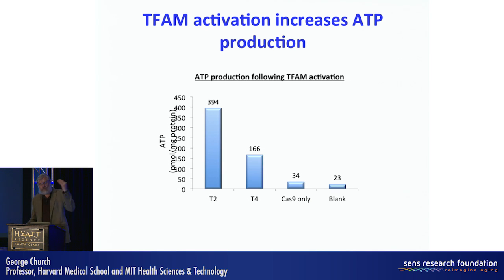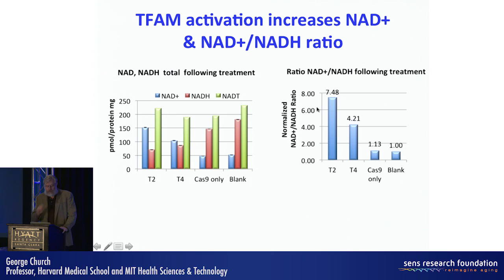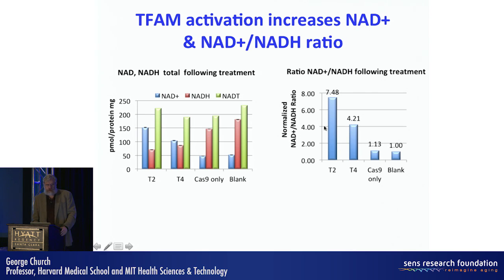Not only is the TFAM gene product RNA upregulated, but ATP is as well — very significantly above the blank or Cas9 controls. Furthermore, NAD+ is up and the ratio of NAD+ to NADH is up quite significantly. T2 is the guide RNA that guides the generic Cas9 activator to a particular target in the TFAM promoter. Here's the NAD to NADH ratio of about 7.5.